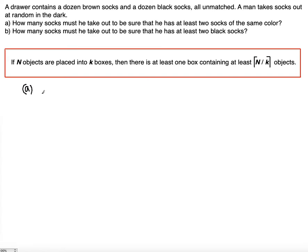Notice that here we're trying to find N, because k value, k boxes, will be two, because we're talking about two colors. Suppose these are two boxes, and you're placing the sock that you chose at random inside each of these boxes. One is brown, the other one is black. So k is equal to two.